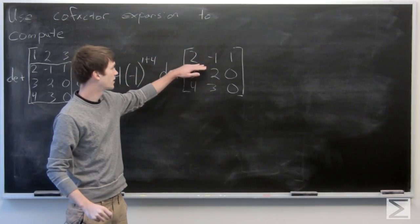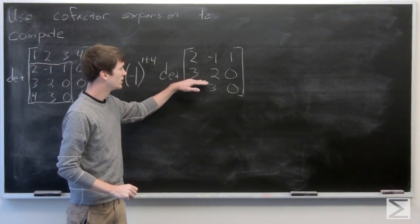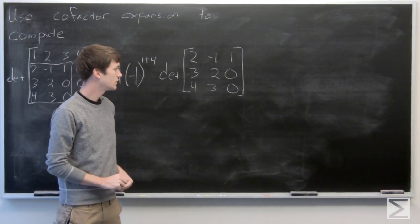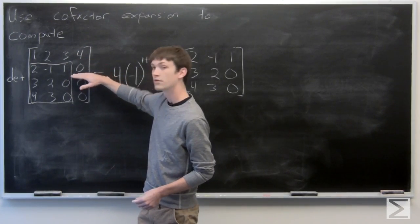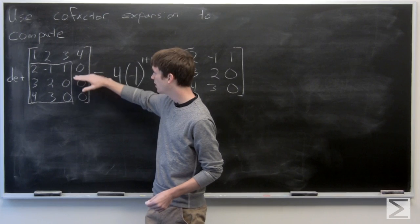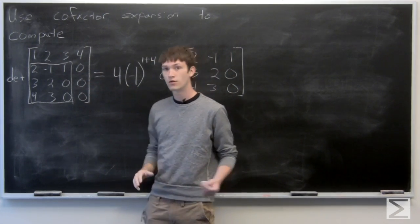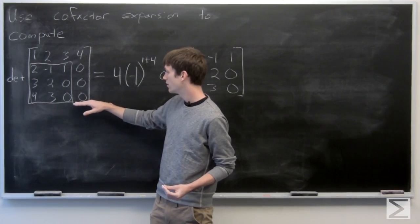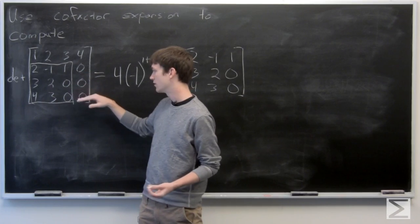So we have our determinant that we're looking to compute is 2, negative 1, 1, 3, 2, 0, and 4, 3, 0. And notice that as we go along our fourth column, we'll have 0 in this position for all of our remaining cofactors. So we'll have 0 times anything is 0, 0, 0.